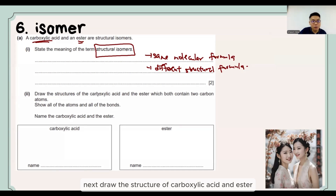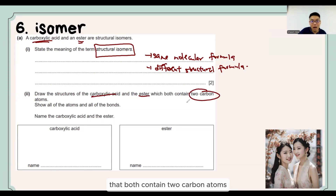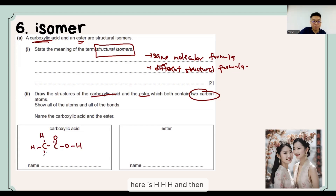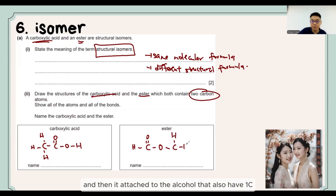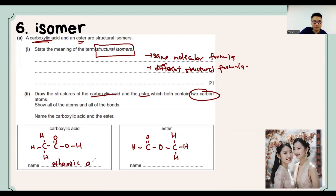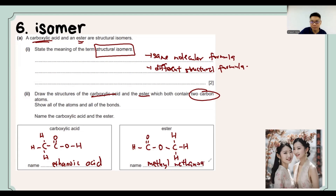The next question says carboxylic acid and ester are structural isomers and asks you to find the meaning. The meaning is: same molecular formula, different structural formula. Then it asks you to draw the structures of a carboxylic acid and an ester that both contain 2 carbon atoms. For carboxylic acid it is 2C with a COOH group — ethanoic acid. For the ester, the acid part has 1C and the alcohol part has 1C — this is methyl methanoate.